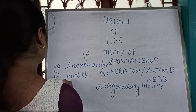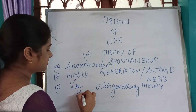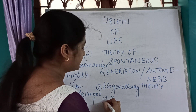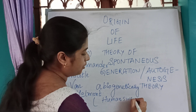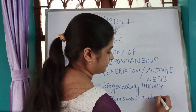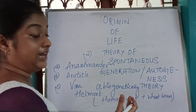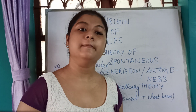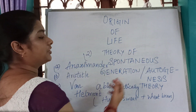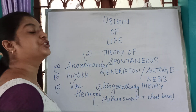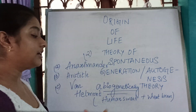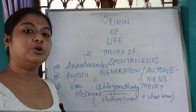Another philosopher was Van Helmont, who said that when human sweat plus wheat bran were kept together for three days, it led to the formation of mice. These are some of the beliefs that supported the theory of spontaneous generation, or autogenesis theory, where life arose from non-living organic matter abiogenetically.